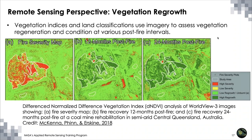Generally, looking at vegetation regrowth one and two years post-fire, we can start to see some vegetation grow back. This is an example from central Queensland, Australia — while this was actually a coal mine rehabilitation, it provides similar attributes showing how long it takes for vegetation to grow back in these regions.